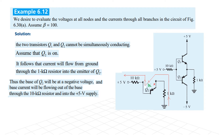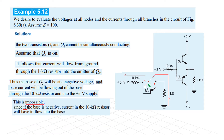Now where will this base current go? It will obviously have to go out of the base through the 10kΩ resistors and into the positive 5V supply. Now this is impossible. Why? Because current is flowing from a lower potential — ground — to a positive voltage. It should be the other way around: current can flow from positive to ground, but it cannot flow from ground to positive. Therefore the assumption that Q2 is conducting is wrong.